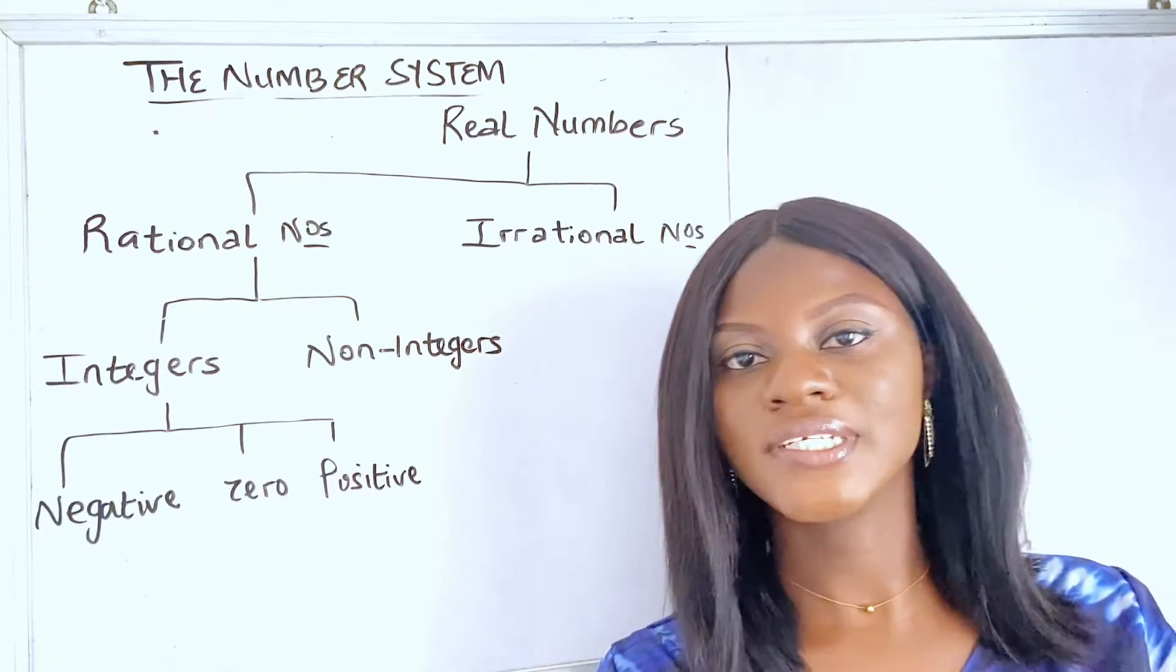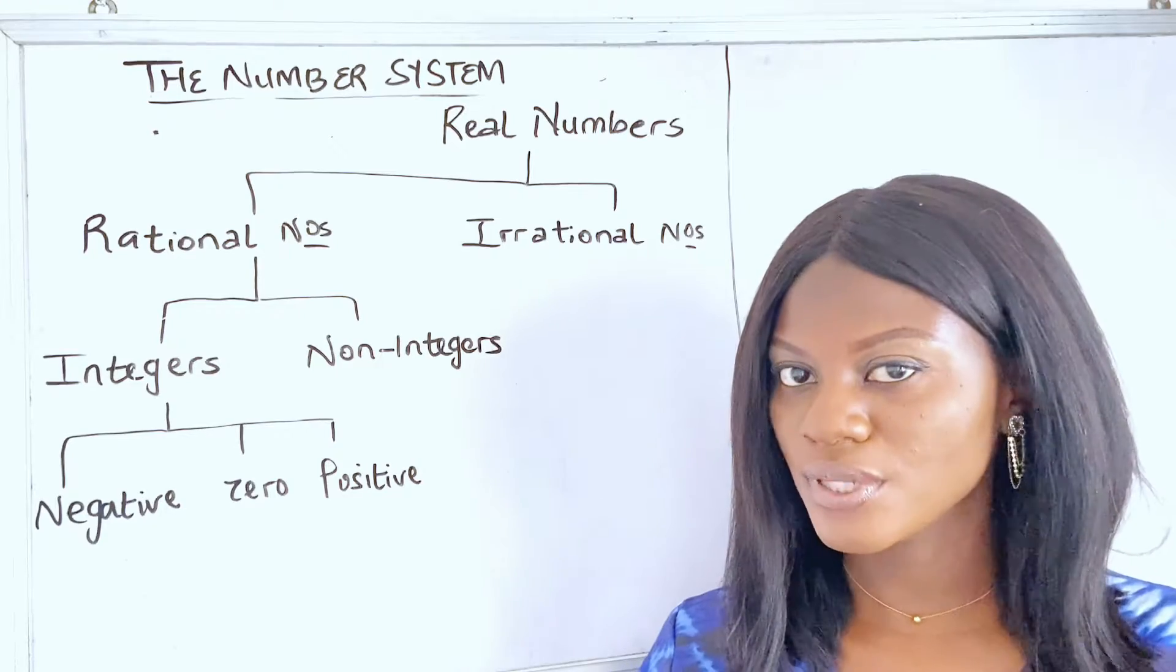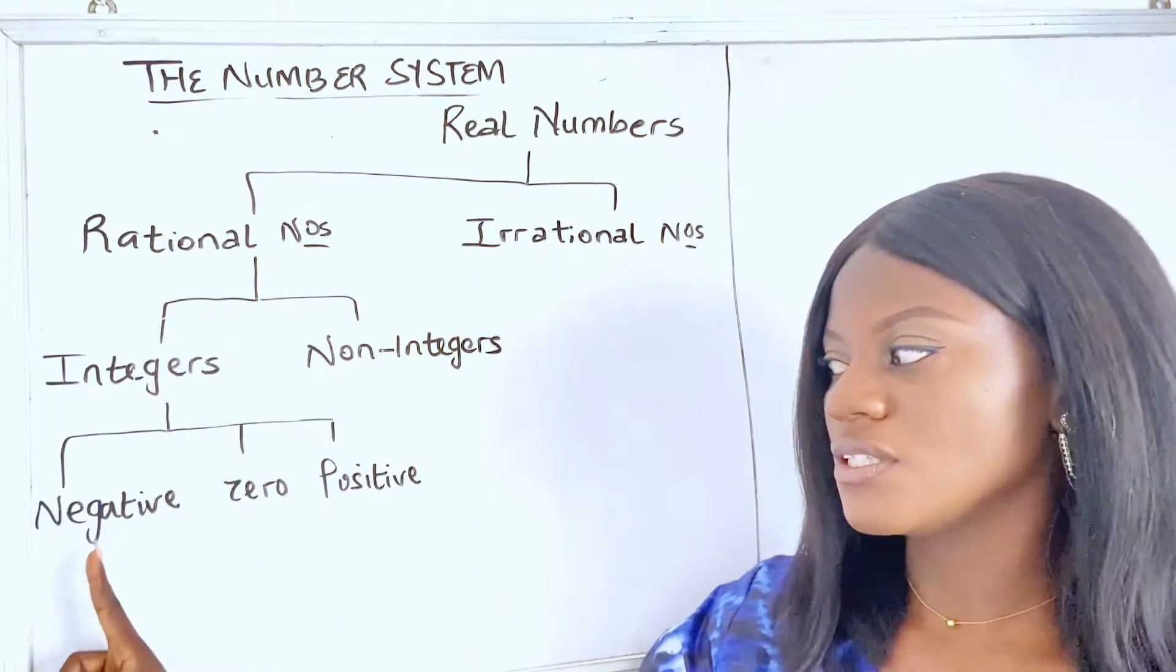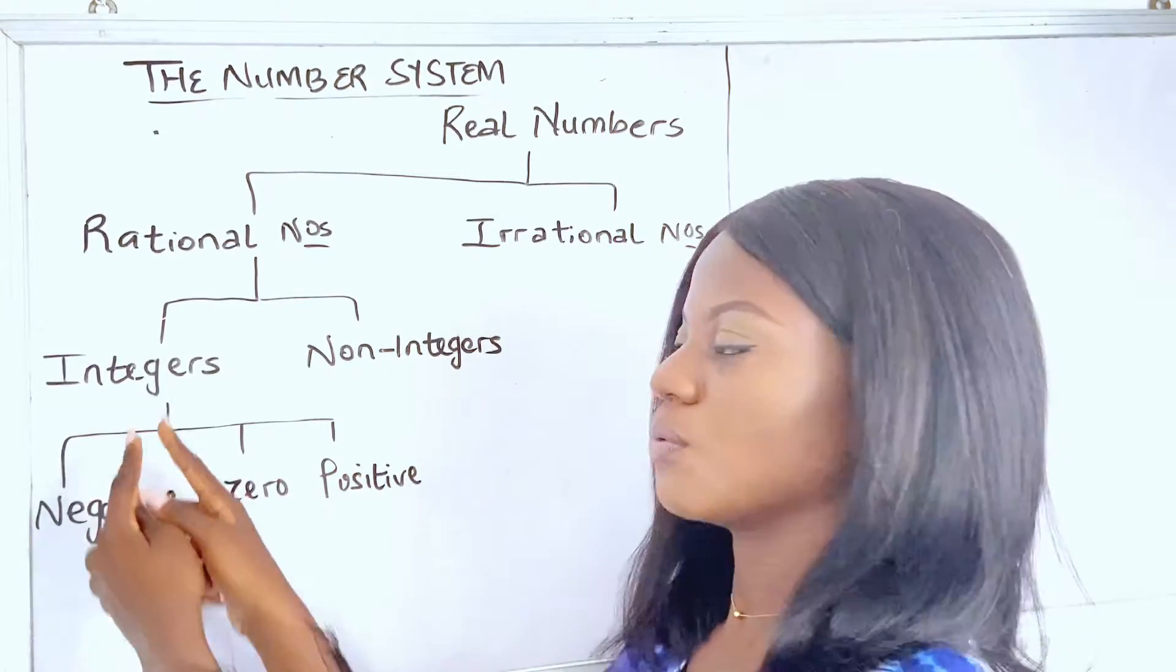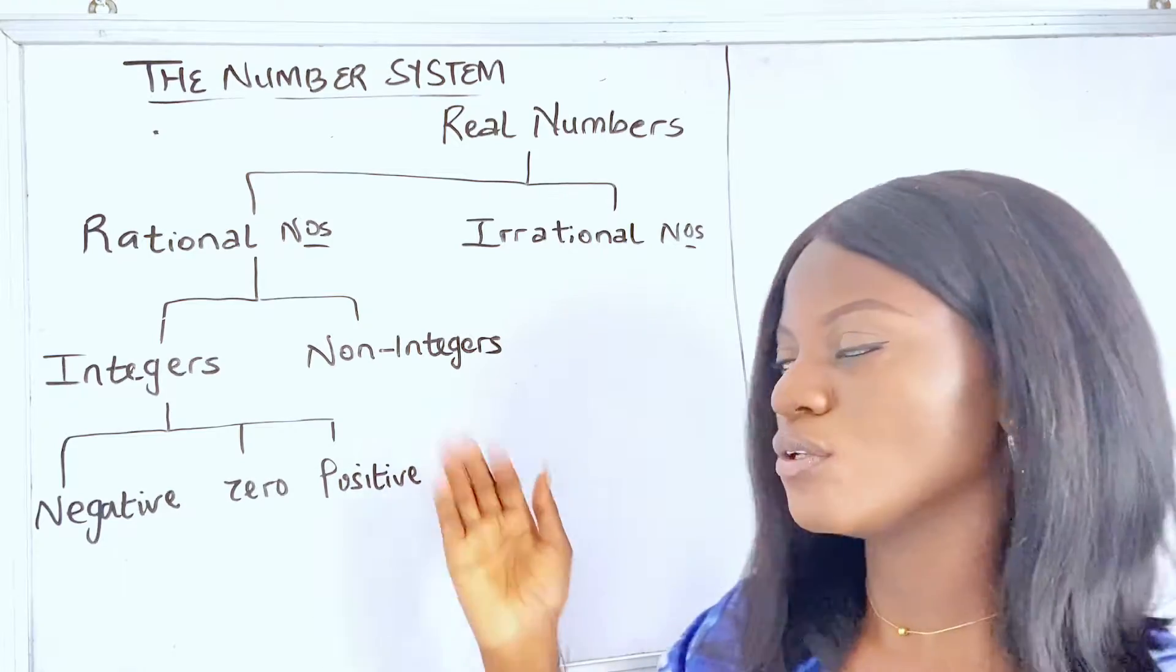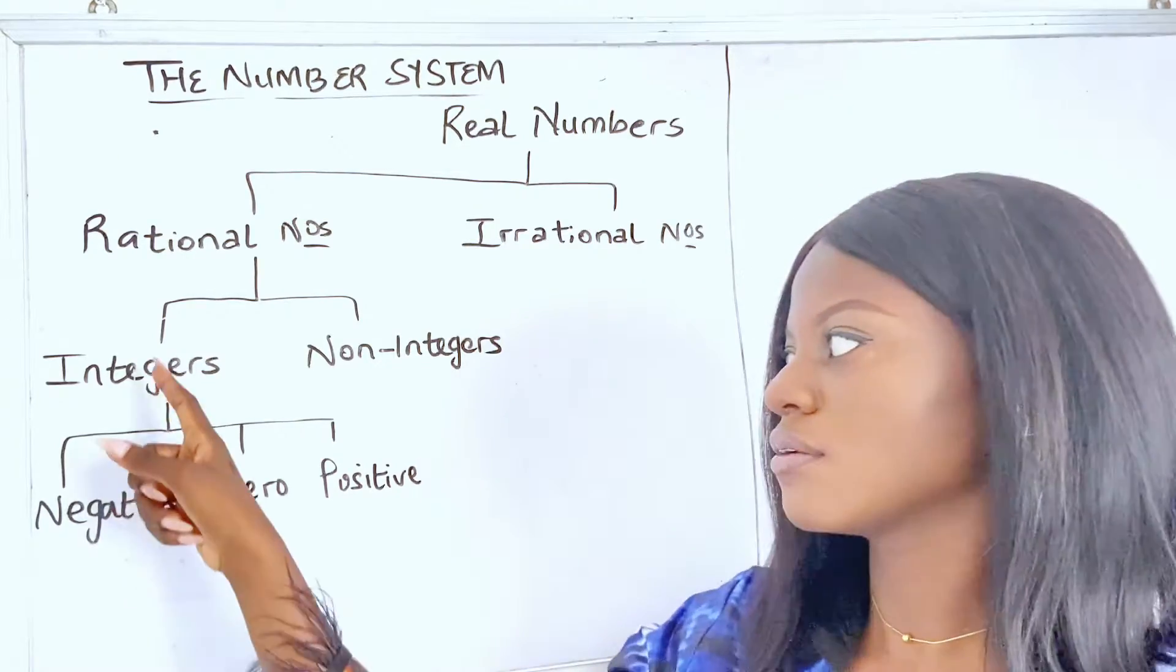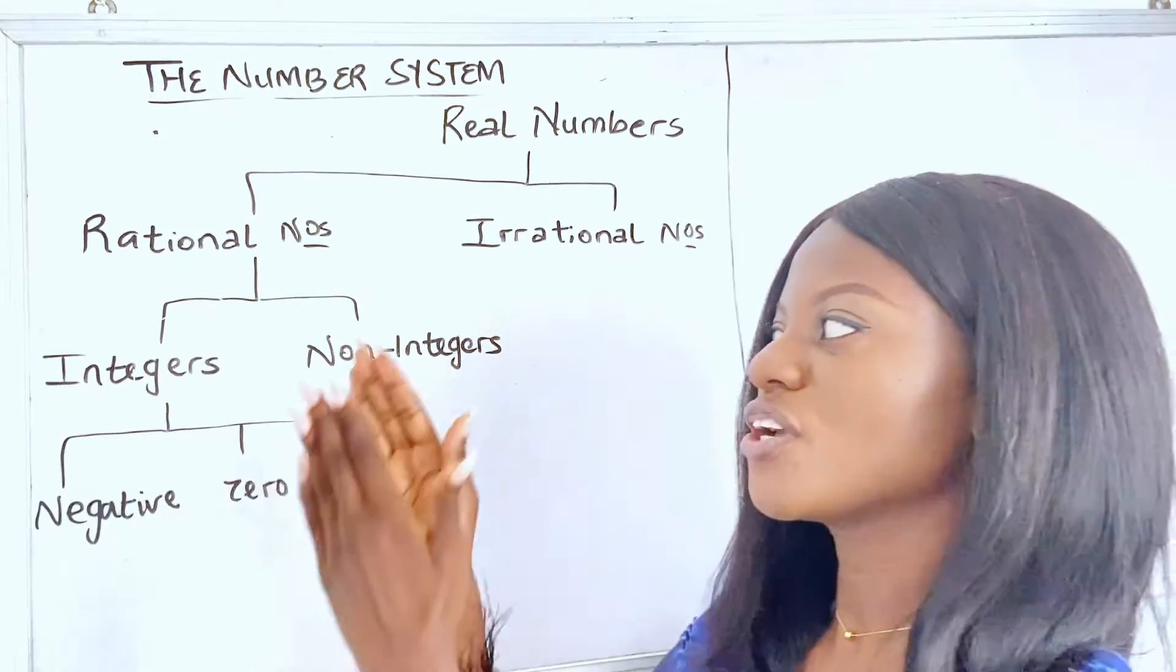So, to make it a little bit easier, we have the tree that shows the numbers that we have, right? And to know this, we have to start from here to the top. So, you have the negative numbers, zero, and your positive numbers. And this makes up what we call the integers. If it's not an integer, it's therefore a non-integer. And so, the integer and the non-integer also makes up what we call the rational numbers.